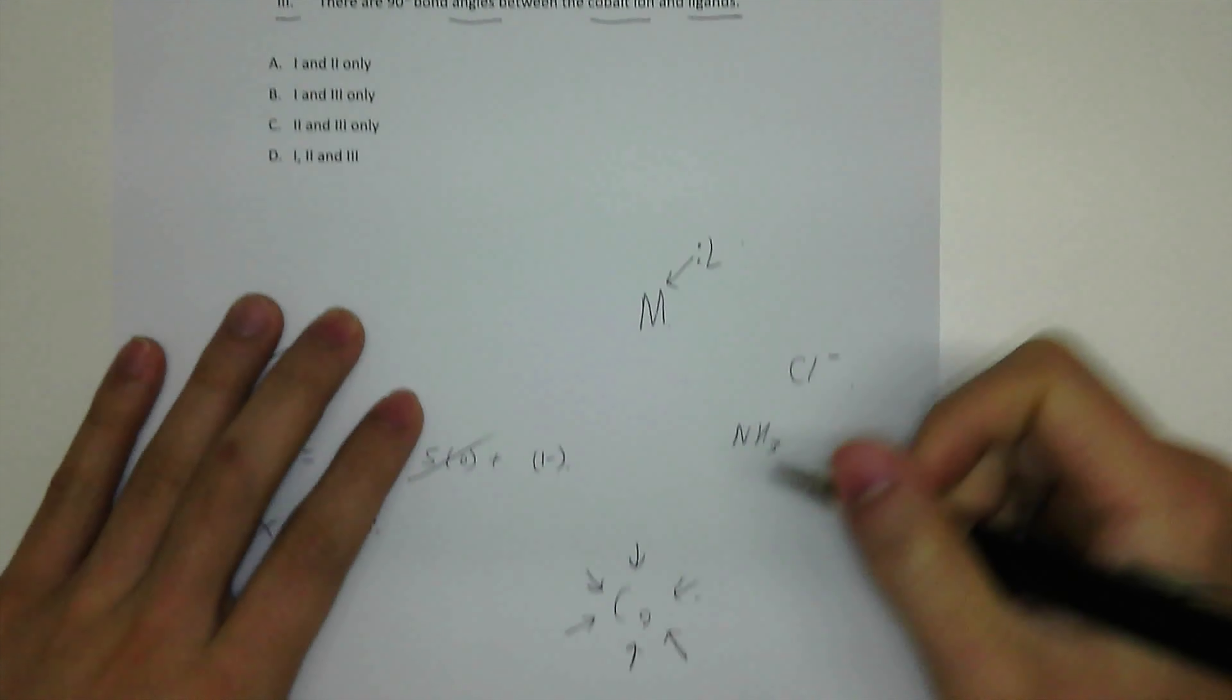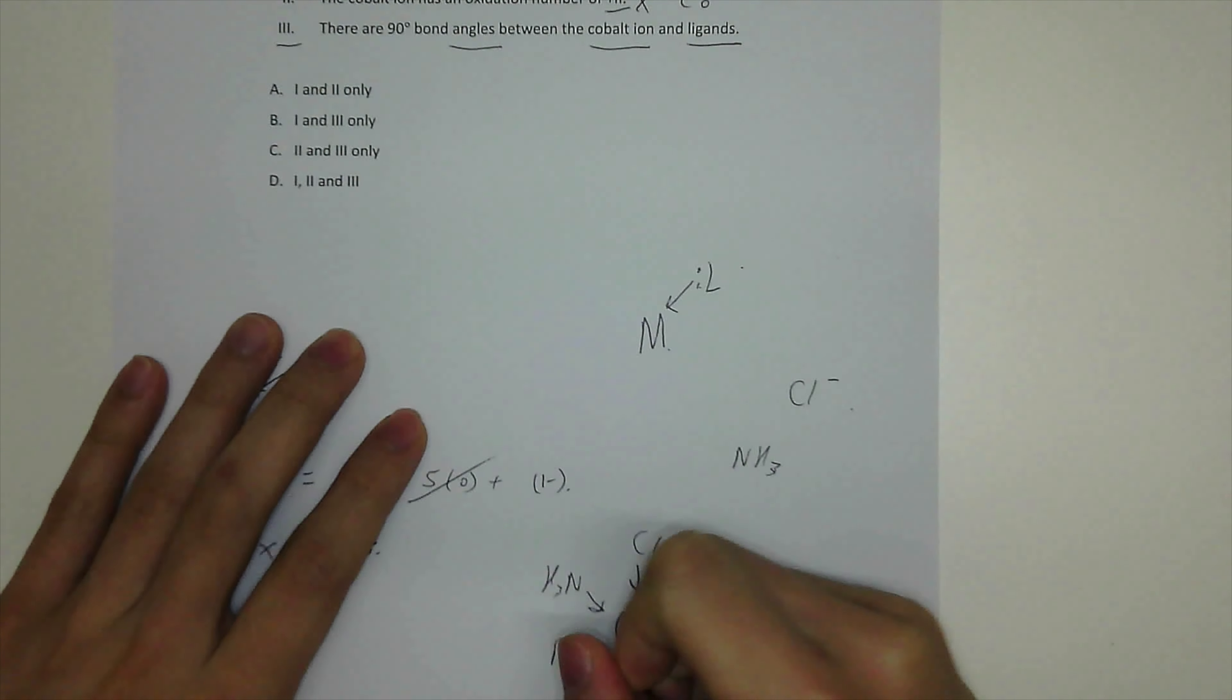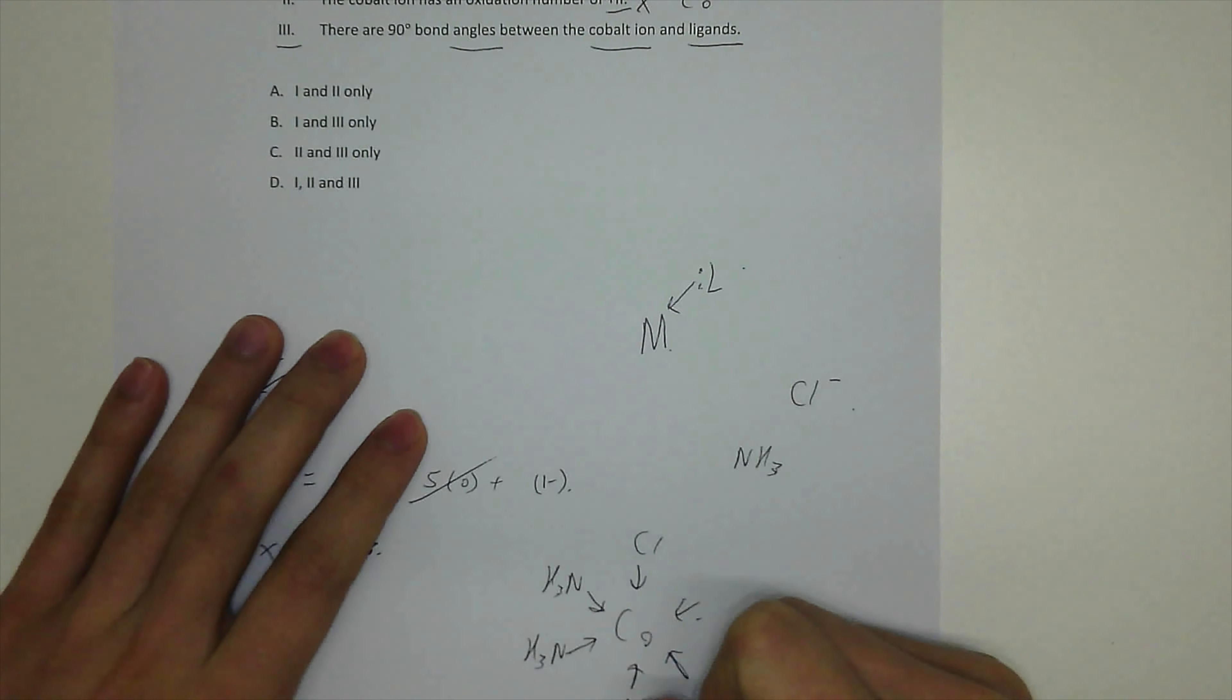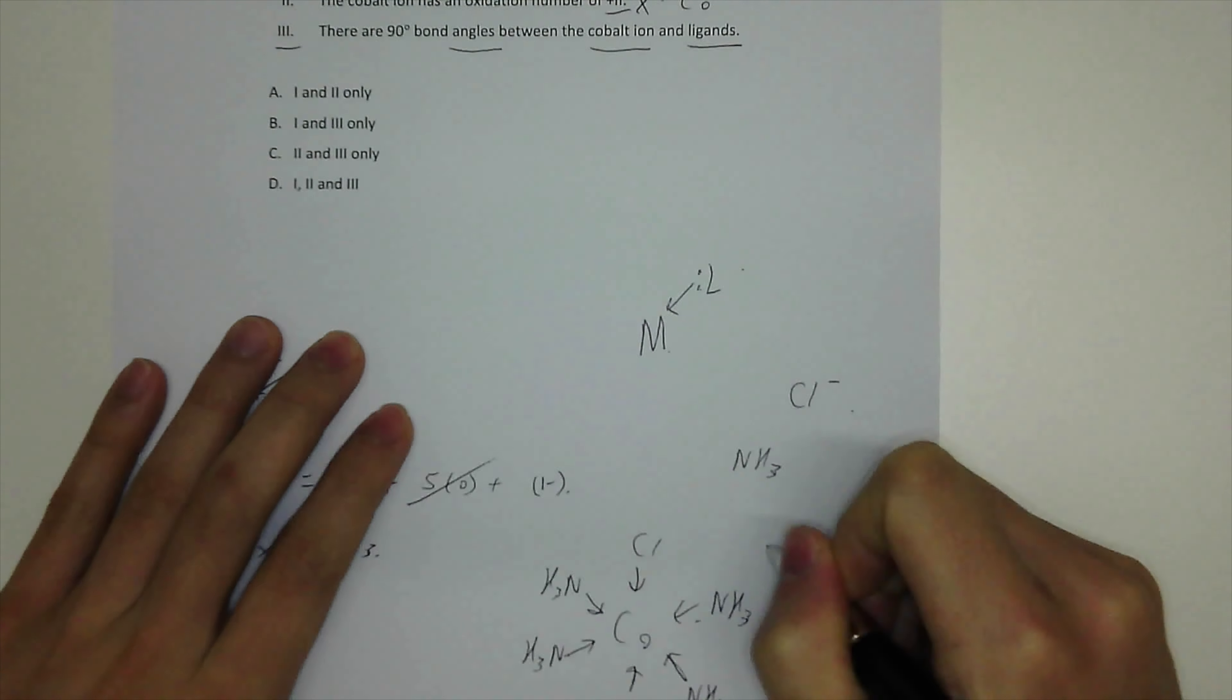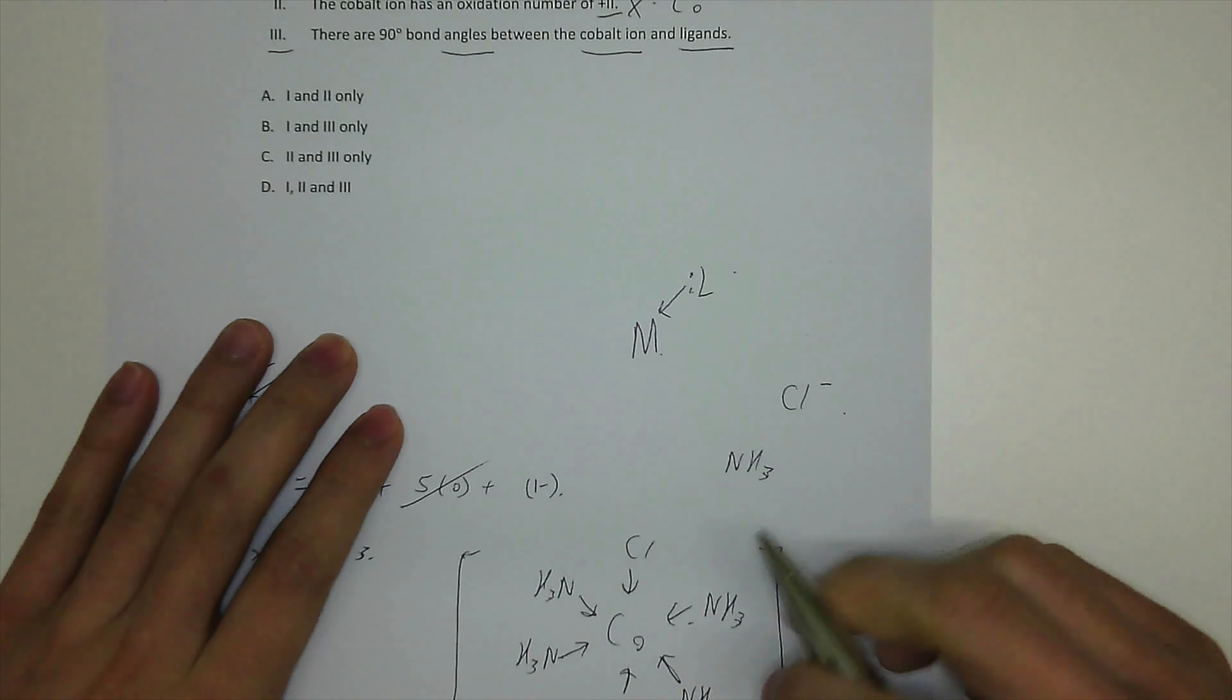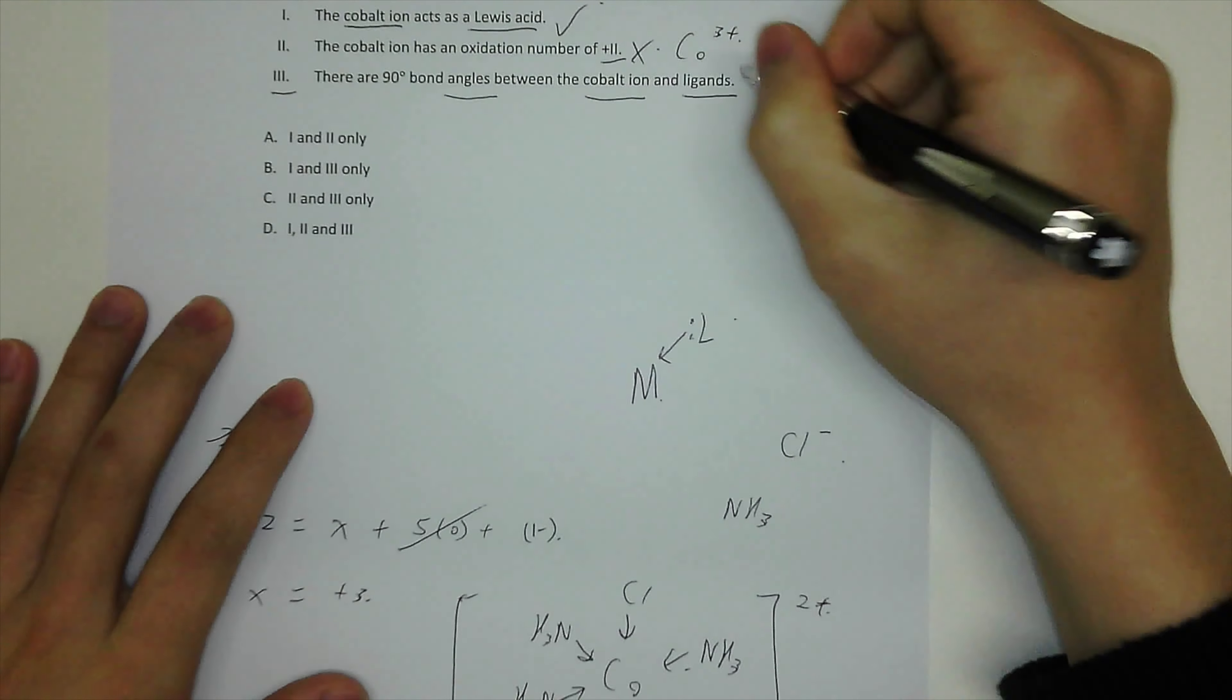Six bonds to cobalt ion, one chloride ion, and the rest are ammonia, ammonia molecule. So that would be the shape of the complex ion. The charge is two positive charge. So all angles are 90 degree, yeah, that's correct.